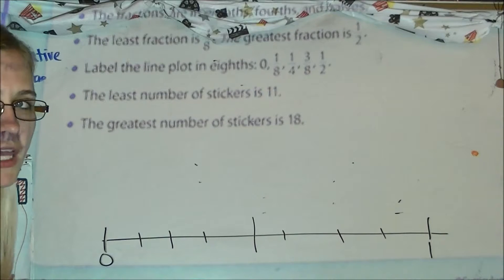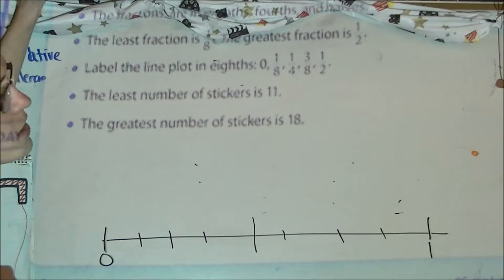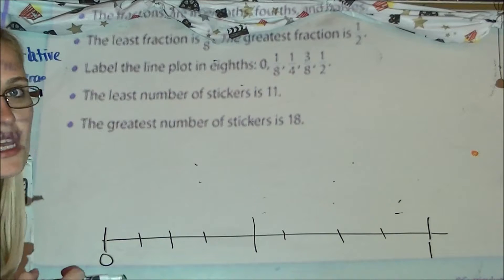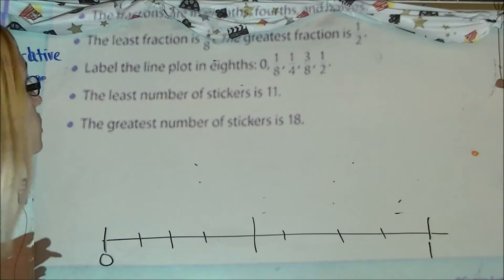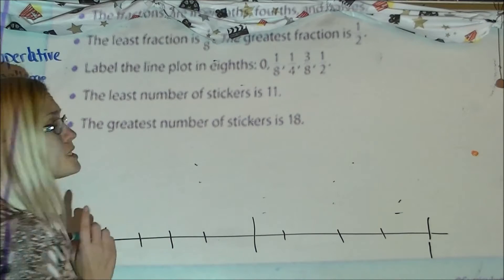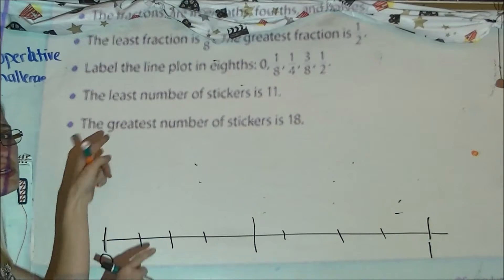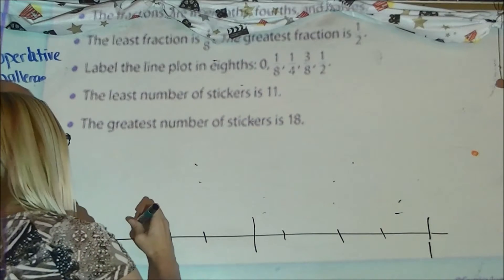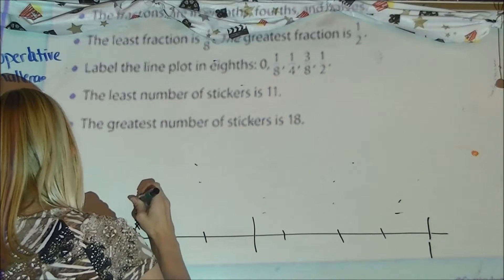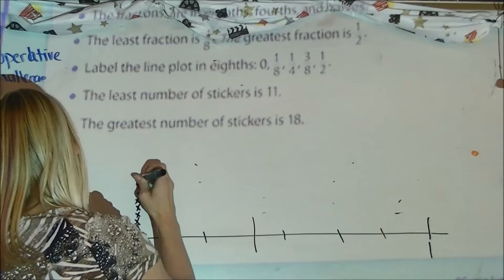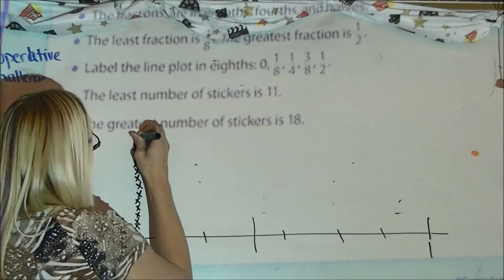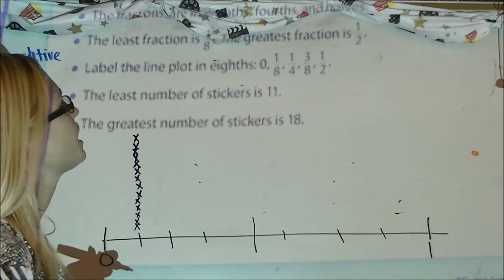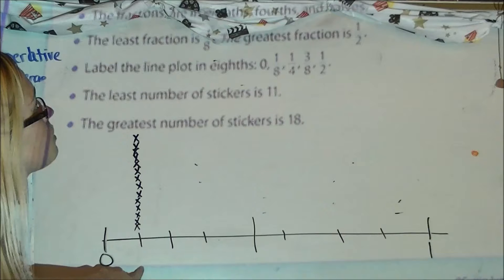Now plot the data from the table. At the 1/8 mark, make 14 data points — you'll need to make your X's small to fit them all. Count 1 through 14. That's a lot, but that's your first 8th mark. Going to the table, 1/4 was equivalent to 2/8, so find the 2/8 mark on your line plot and make 18 data marks there.